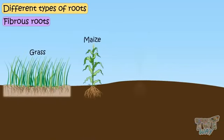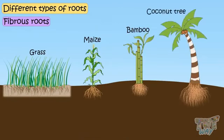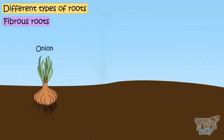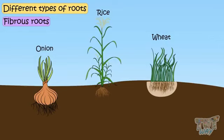Grasses, maize, bamboo, coconut tree, onion, rice and wheat are the plants that have fibrous roots.